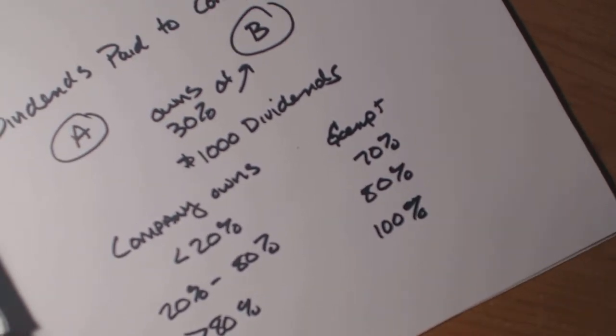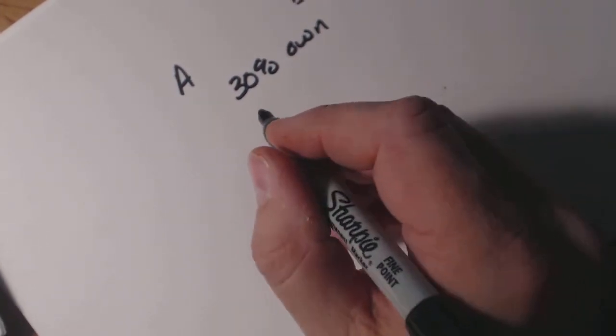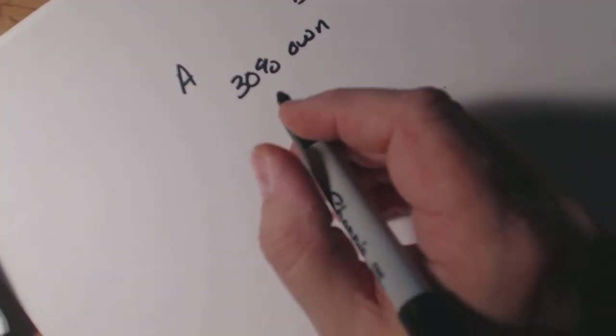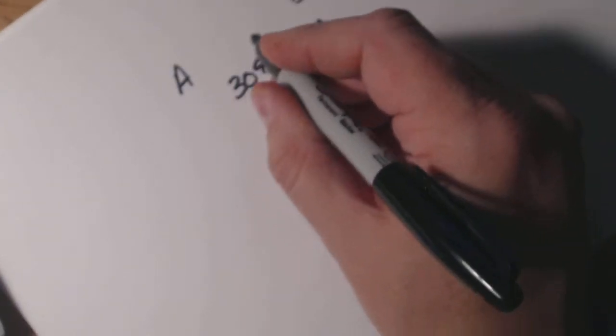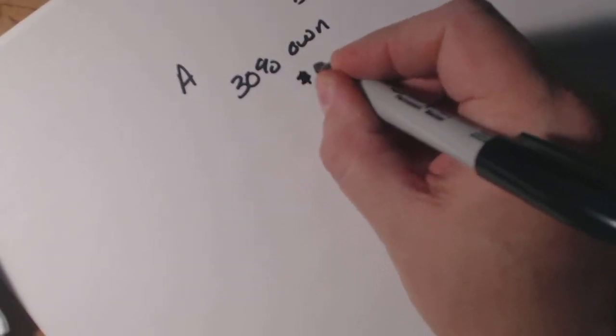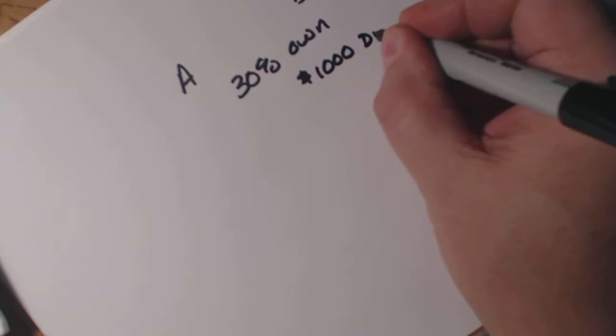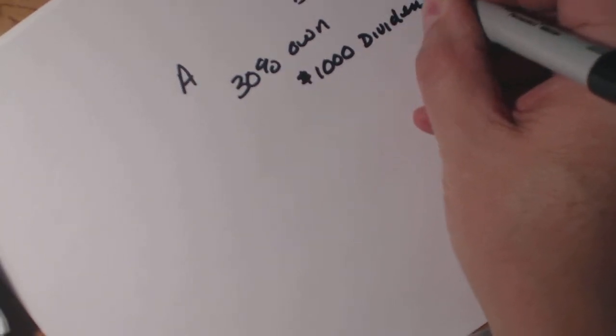So let's run this out as an equation, just so you can see this. So we have Company A and Company B, and they own 30%. So Company A receives from Company B $1,000 in dividends.